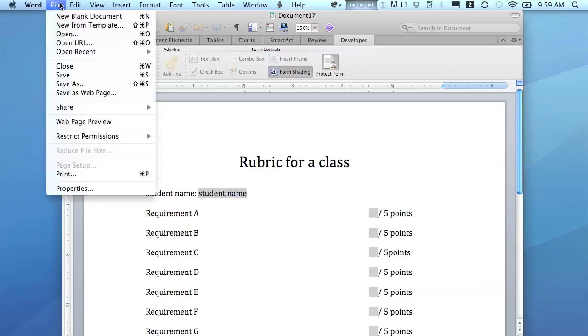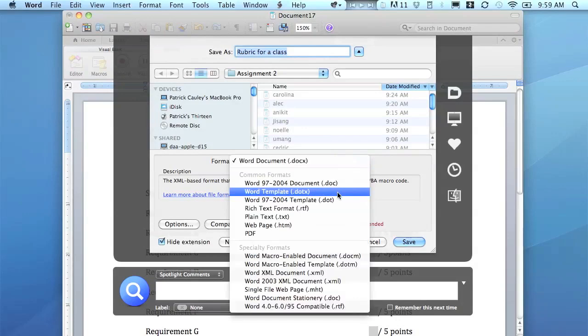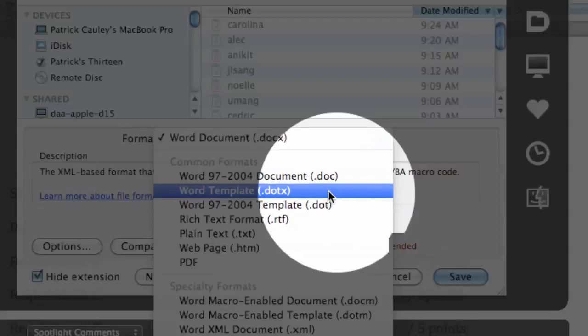So what I want to do now is I'm going to save it, but I'm not going to save it as a document. I want to save it as a template. So go to File, Save As, and where it says Format, it's going to say Word Document. I'm going to change that to Word Template. It's a .dotx, and that'll be the same on PC as well.